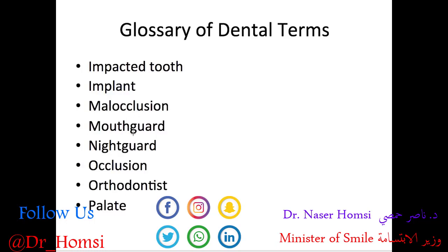A mouth guard is a removable device worn over the teeth to protect them from damage during sports. A night guard is similar — also removable — but worn at night to protect teeth from damage due to bruxism. Occlusion refers to the contact between upper and lower teeth in more general terms — how they contact together in order to bite and chew.